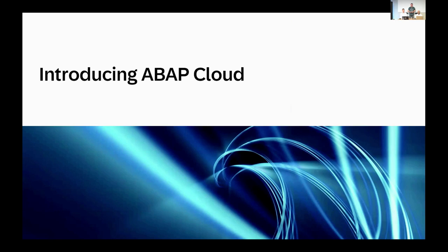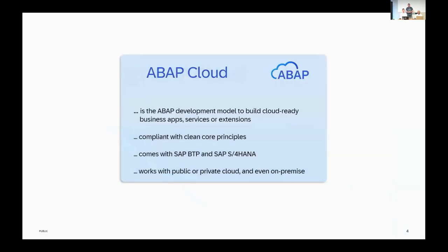So what is ABAP Cloud? ABAP Cloud is the development model to build cloud-ready apps, services, and extensions. It's a development model — not just a set of technologies you pick and choose — but a real development model that describes how to use all the different technologies together to reach an app, service, or extension. If you're using ABAP Cloud including RAP, you are building cloud-ready applications. Cloud-ready means they would run in the cloud, but they don't have to — they can also run on-premise.